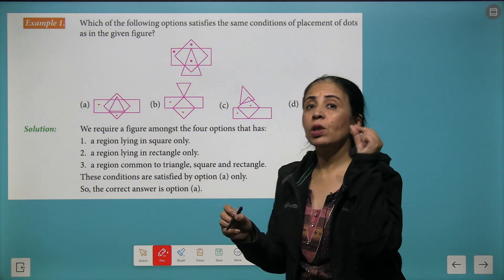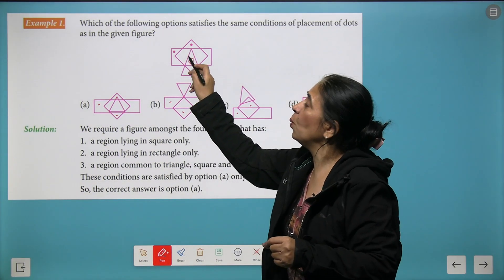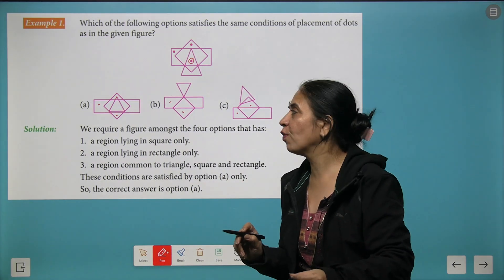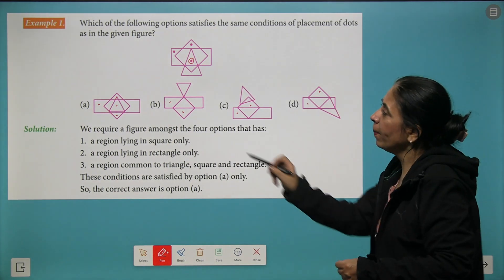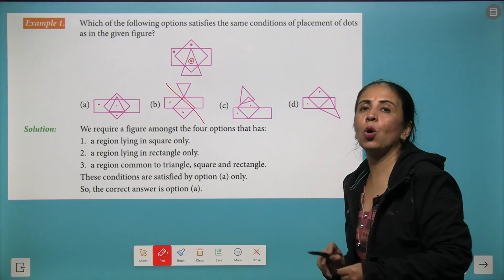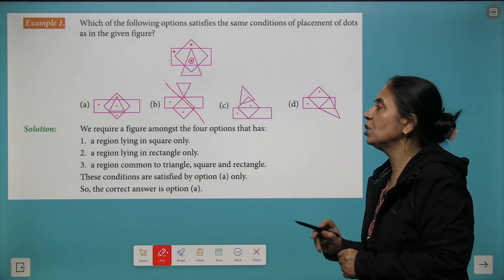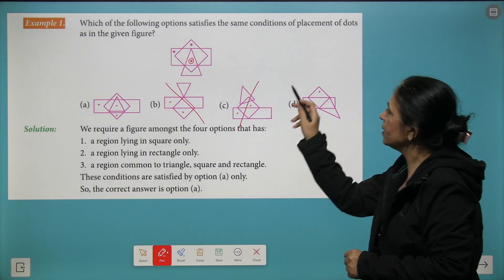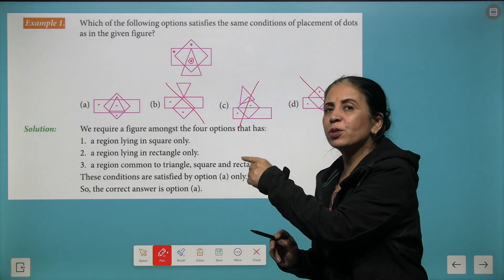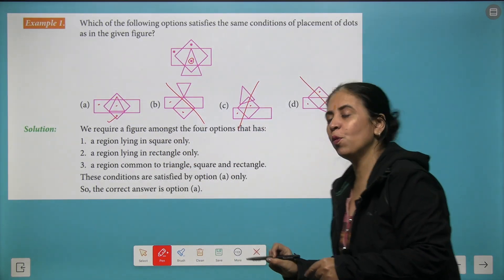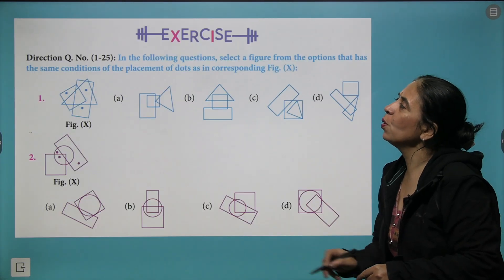The third dot exists in all the three figures. We can place it here in the center, but here we do not find the common part of all three shapes. The same thing happens here, and this is also omitted. So your right option becomes A, and we move further with more questions for you.